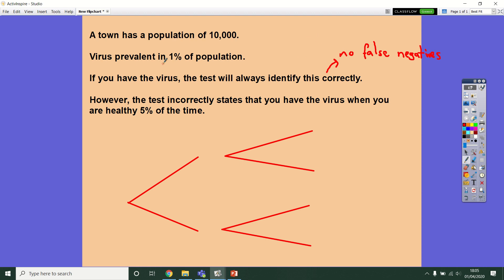Secondly, however, the test will sometimes incorrectly state that you've got the virus, when actually you don't. And it does that 5% of the time. So this is the rate of false positives, where you're healthy, but you're told you actually have the virus.